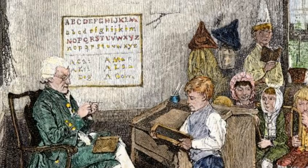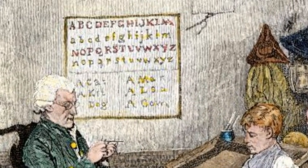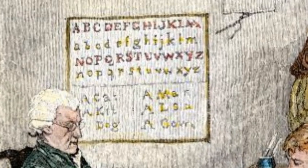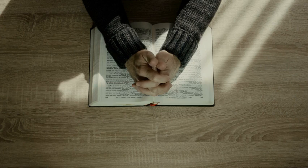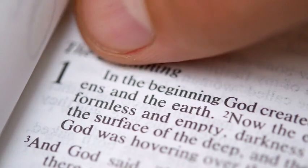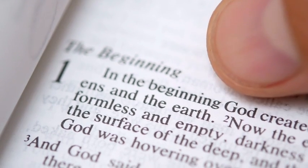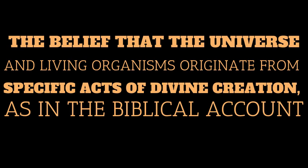Public education on American soil has existed longer than America itself. The 17th-century Puritans in the colonies formed public elementary schools focused predominantly on reading so that their children could learn the Bible. Religious views continued to be taught in schools throughout the 18th century — school often started with Bible prayers, and classes, including science, were presented through a religious lens. Biology was explained through religious perspectives, specifically creationism.